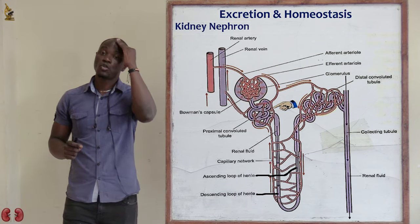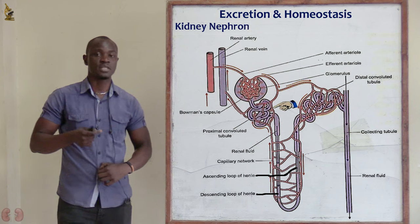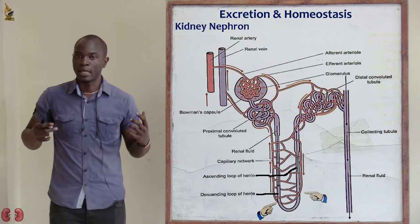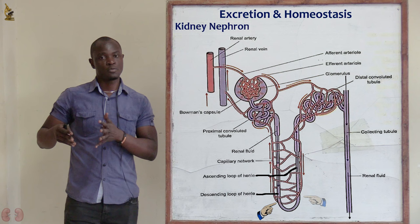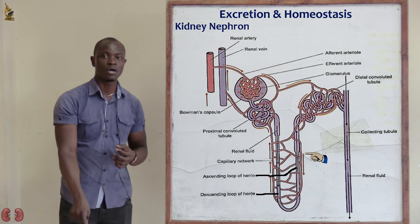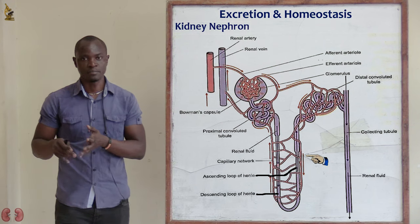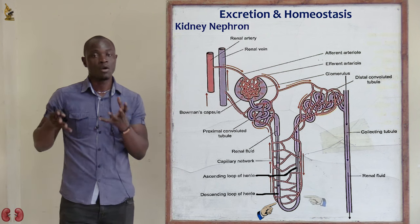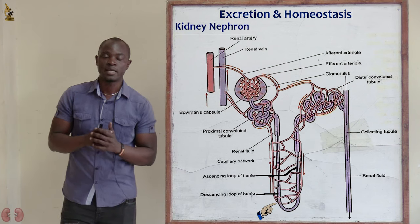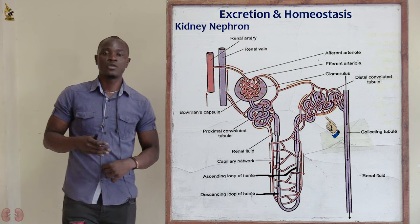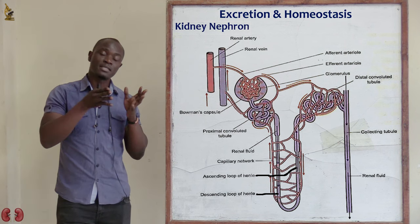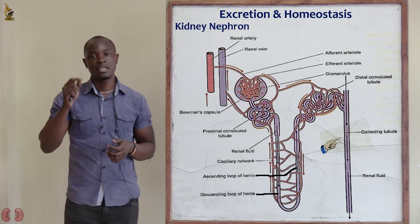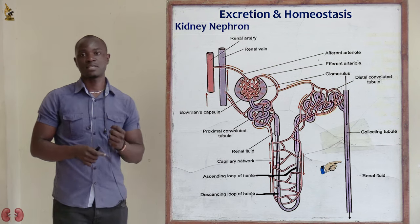After that, we go to the proximal convoluted tube, where there is reabsorption of different substances into the blood, including different mineral ions. Then we go to the loop of Henle, where water reabsorption takes place. Desert organisms have a very long loop of Henle for maximum reabsorption of water, while aquatic organisms have a very short loop of Henle, because water is readily available in the surrounding. After the loop of Henle, we go to the distal convoluted tube, where there is reabsorption of water through anti-diuretic hormone produced by the pituitary gland. Then the collecting duct forms the pelvis at the end of the line.